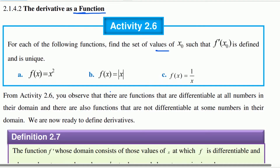The derivative of a function at a point can generate the derivative as a function. For Activity 2.60, for each of the following functions, find the set of values of x-naught such that f of x-naught, the derivative, is defined.